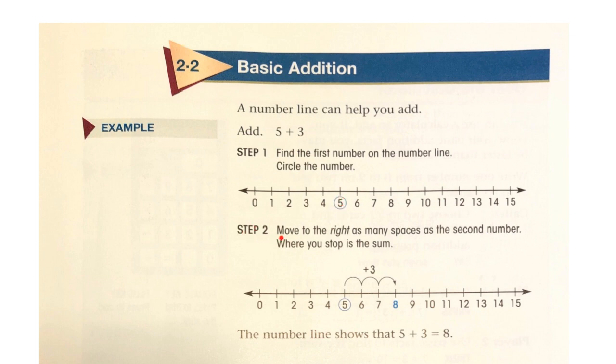Step 2, move to the right as many spaces as the second number. Where you stop is the sum. So we started at 5 and then we're adding 3: 1, 2, 3. So the number line shows that 5 plus 3 equals 8.